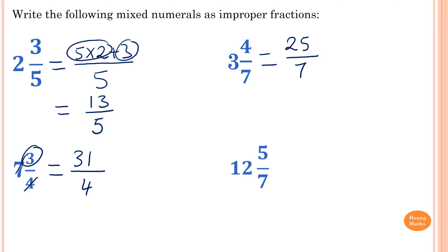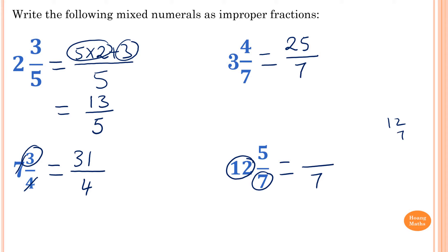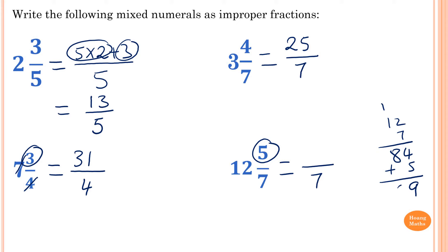Last one: 12 and 5 over 7. Write the 7 down first. Then 12 times 7 — if you don't know your 12 times table, go 7 times 2 is 14, carry 1; 7 times 1 is 7, add 1 is 8 — so 84. Then add 5 on top: 84 plus 5 is 89. So the answer is 89 over 7.